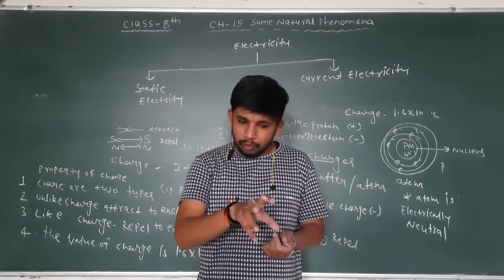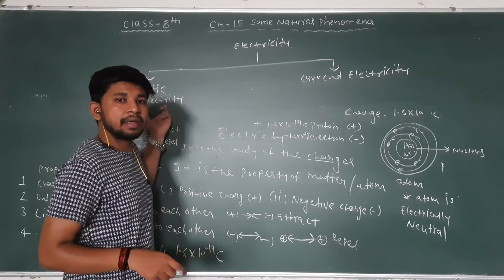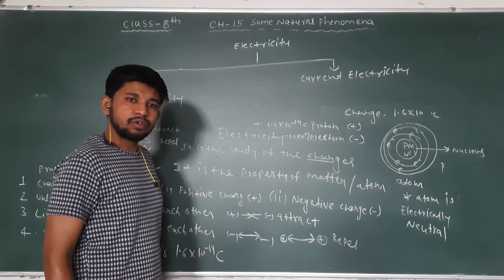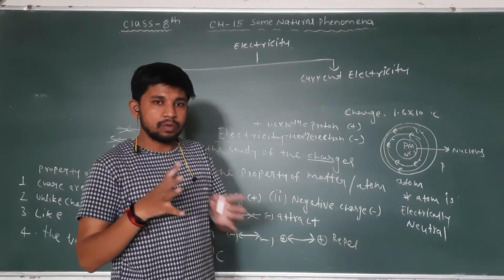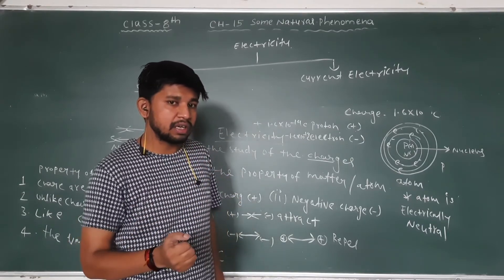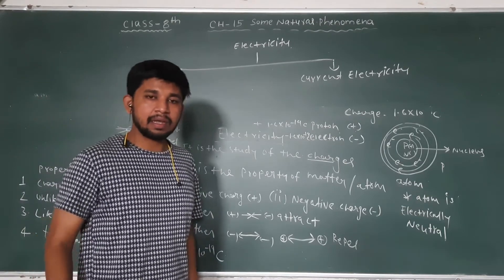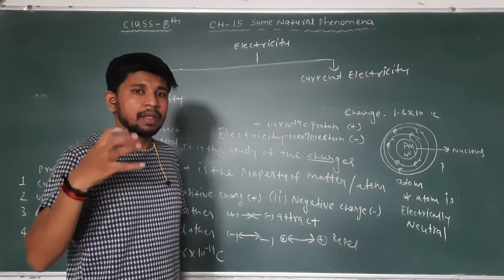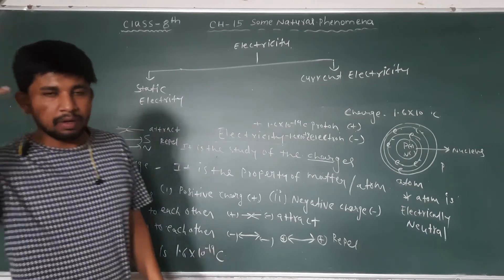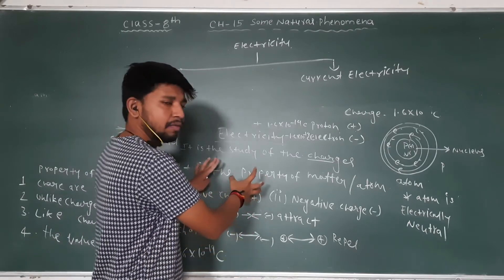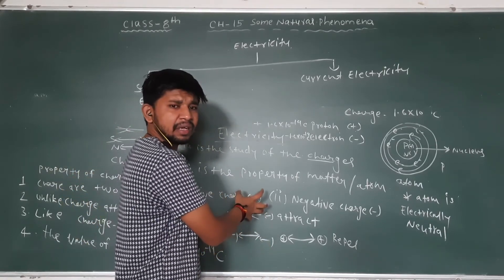Static electricity is the force due to the imbalancing of charges. When we rub objects, the charge will jump from one body to another body. When charged and unbalanced, an electrostatic force is generated — so a paper will be attracted. The main thing about static electricity is that insulators can be charged. You can see the balloon — when you rub the balloon, it gets charged and can attract things.